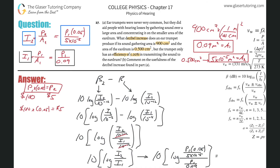The P₁ terms cancel. We're left with 10 times log of (0.09 × 0.05) / (5 × 10⁻⁵), which simplifies to 10 times log(90). That gives approximately 19.5 decibels. So the decibel level increase is 19.5 dB. Thanks for tuning in — please subscribe and we look forward to helping you with more problems.